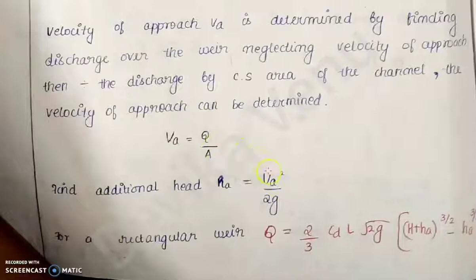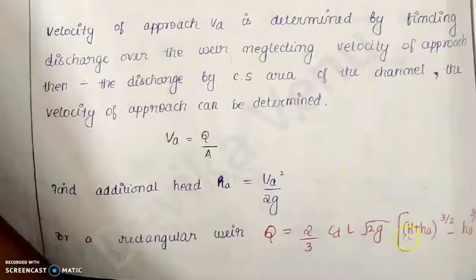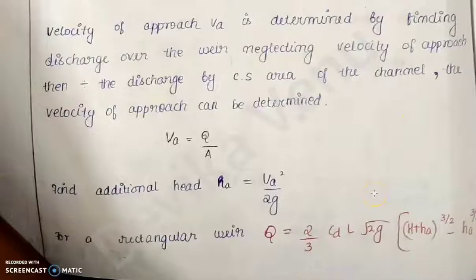We find out VA and then the head due to velocity of approach HA. The difference in the discharge equation is that previously it was into H raised to 3/2. The equation was 2/3 × CD × L × root 2g × H raised to 3/2. But when you consider velocity of approach, the integration changes from 0 to H, to HA to H plus HA.